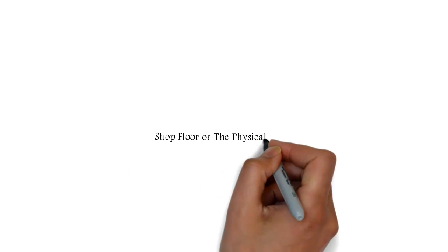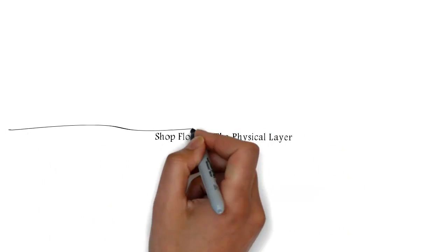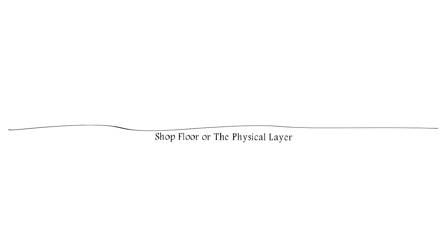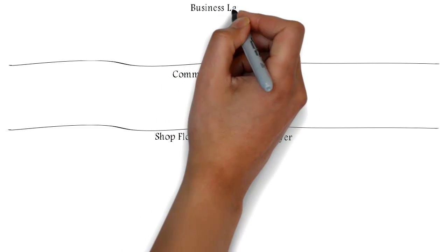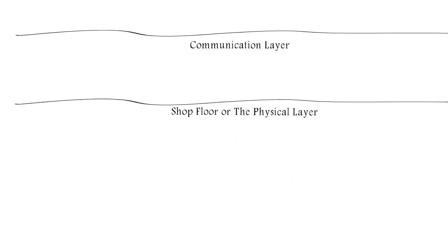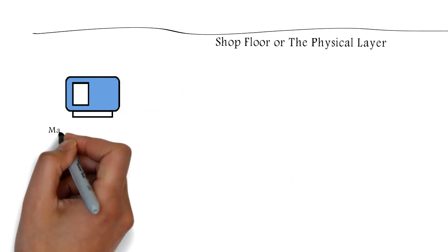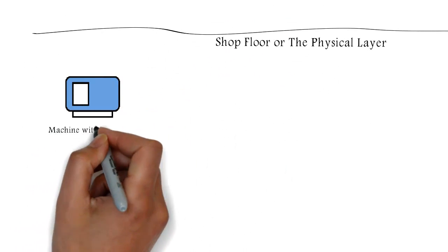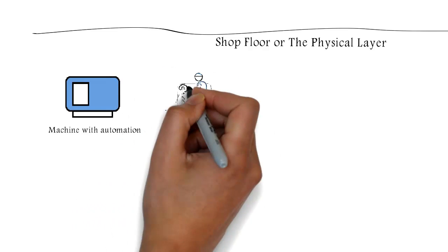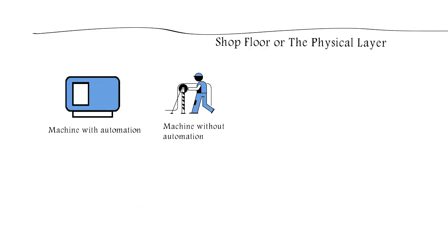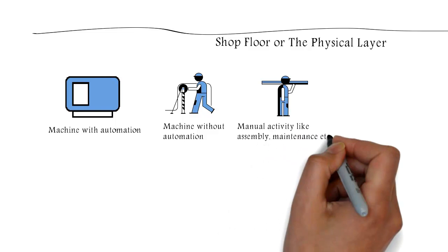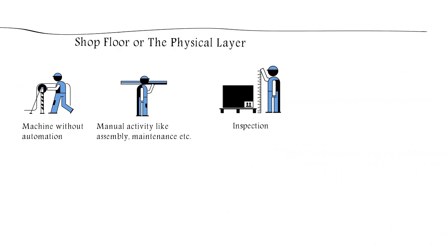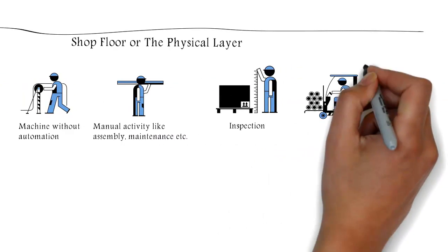The Industry 4 solution of InTouch consists of hardware, which is part of the shop floor or the physical layer, and software, which is part of the communication layer and business layer. The shop floor or the physical layer consists of machines with automation, machines without automation, manual activity like assembly, maintenance etc., inspection and material handling.